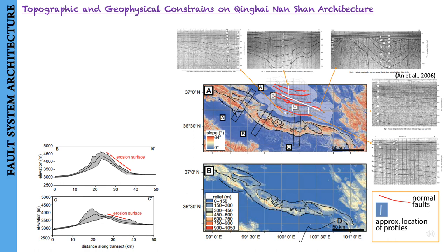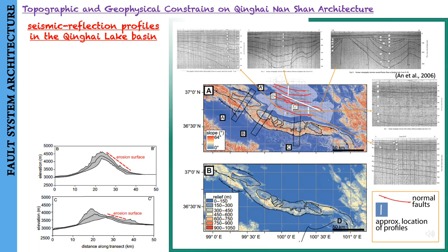They also note what is happening in the Qinghai Lake Basin north of the Qinghai-Nanshan. The basin has 500 to 1000 m of sediment as revealed by seismic reflection surveys. Figure profiles published by An and others in 2006 show five main normal faults as well as the presence of an unconformity and growth strata.